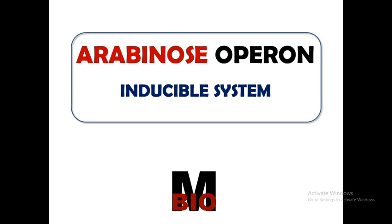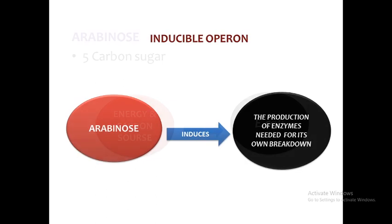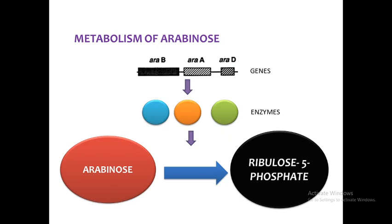The arabinose operon is a gene regulatory mechanism found in prokaryotic organisms such as E. coli. It is an example of an inducible system. Arabinose is a 5-carbon sugar that E. coli utilizes for energy and as a carbon source. Just like lactose in the lac operon, arabinose acts as an inducer, and its presence in the cell induces the production of enzymes needed for its own breakdown.